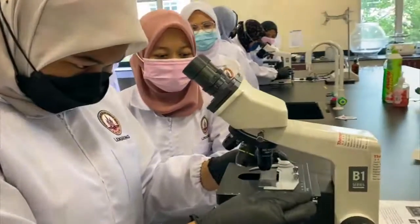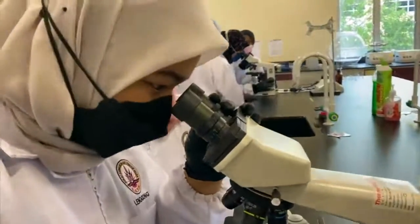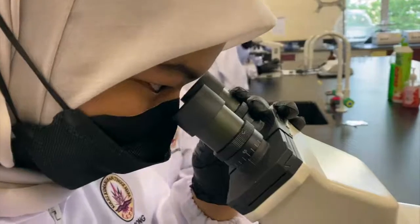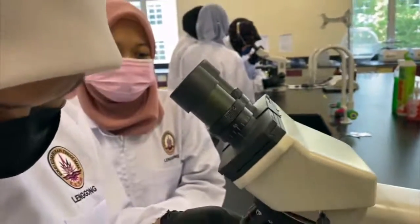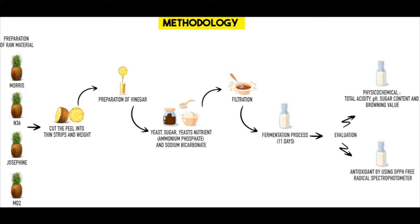Proceeding to methodology: the first step is to prepare the raw material. There are 4 species of pineapple used — Moris, N36, Josephine, and MD2. Next, we cut the peel into thin strips and wash them. Then we proceed to the preparation of the vinegar itself.